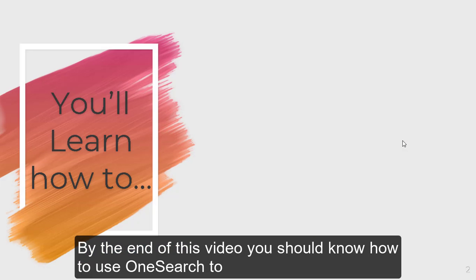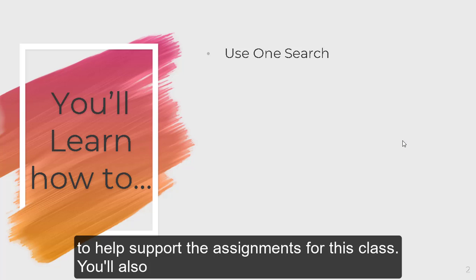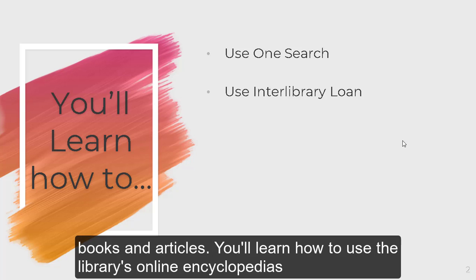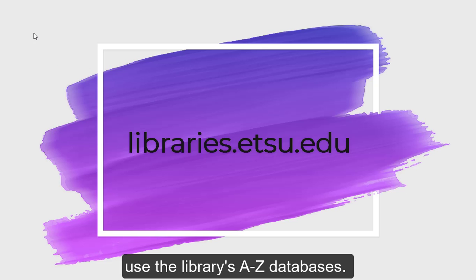By the end of this video, you should know how to use OneSearch to find books, newspapers, magazine articles, and scholarly journal articles to help support your assignments for this class. You'll also learn how to use the library's interlibrary loan services to request books and articles, how to use the library's online encyclopedias to find background information on your topic, and how to use the library's A to Z databases.